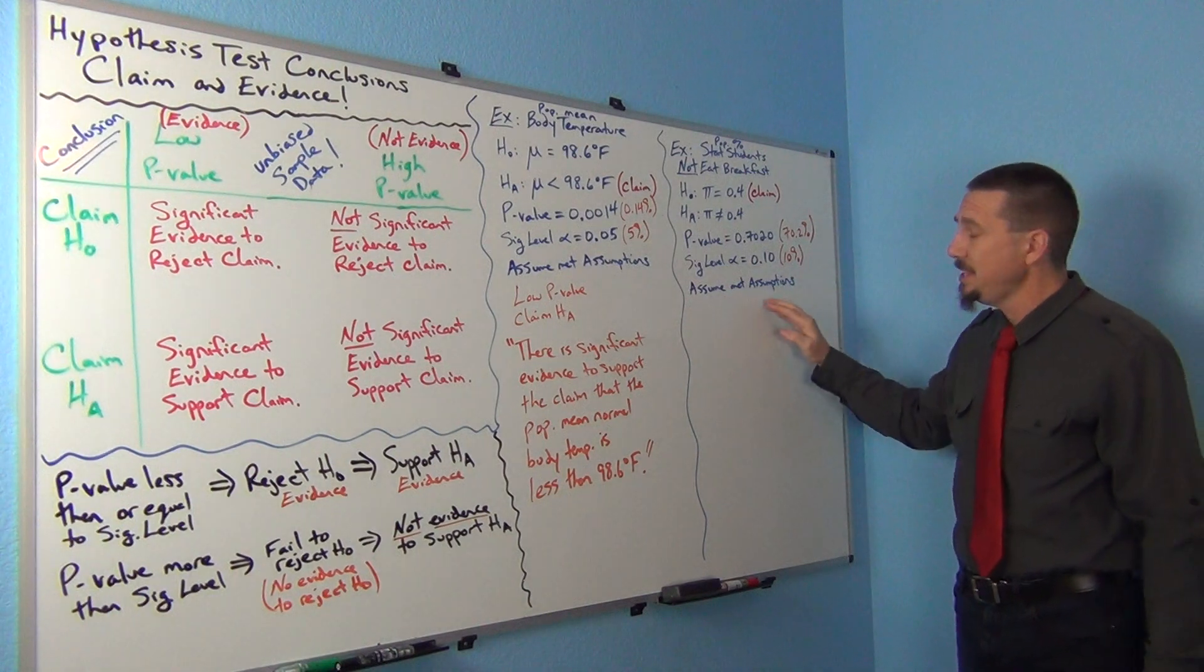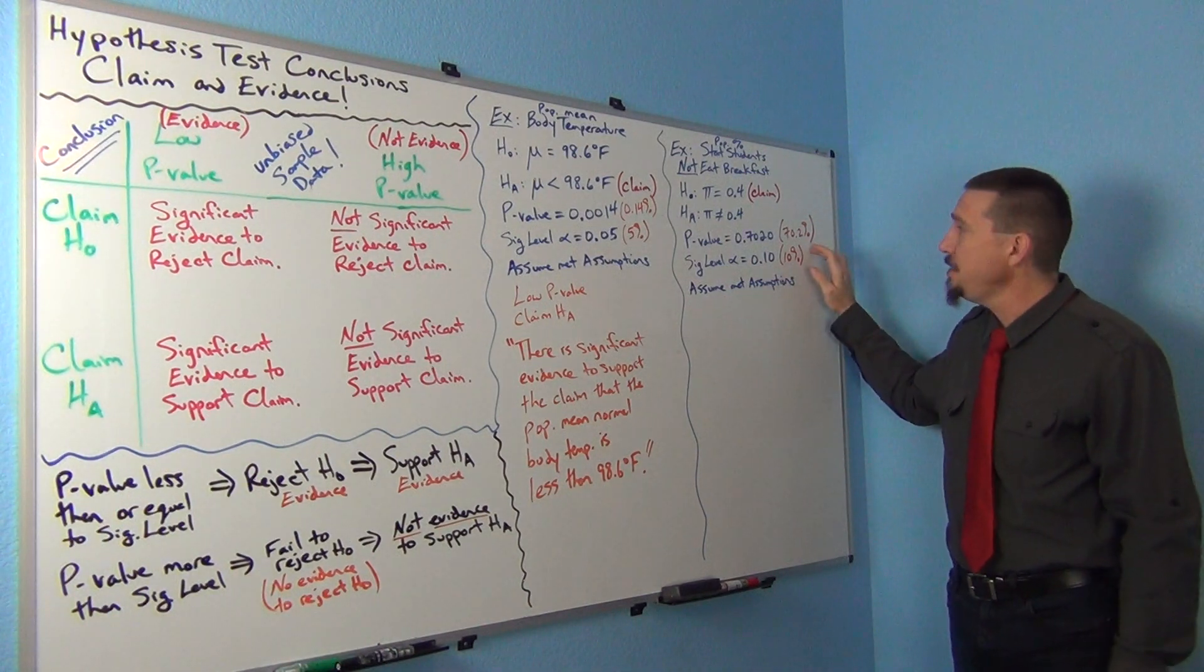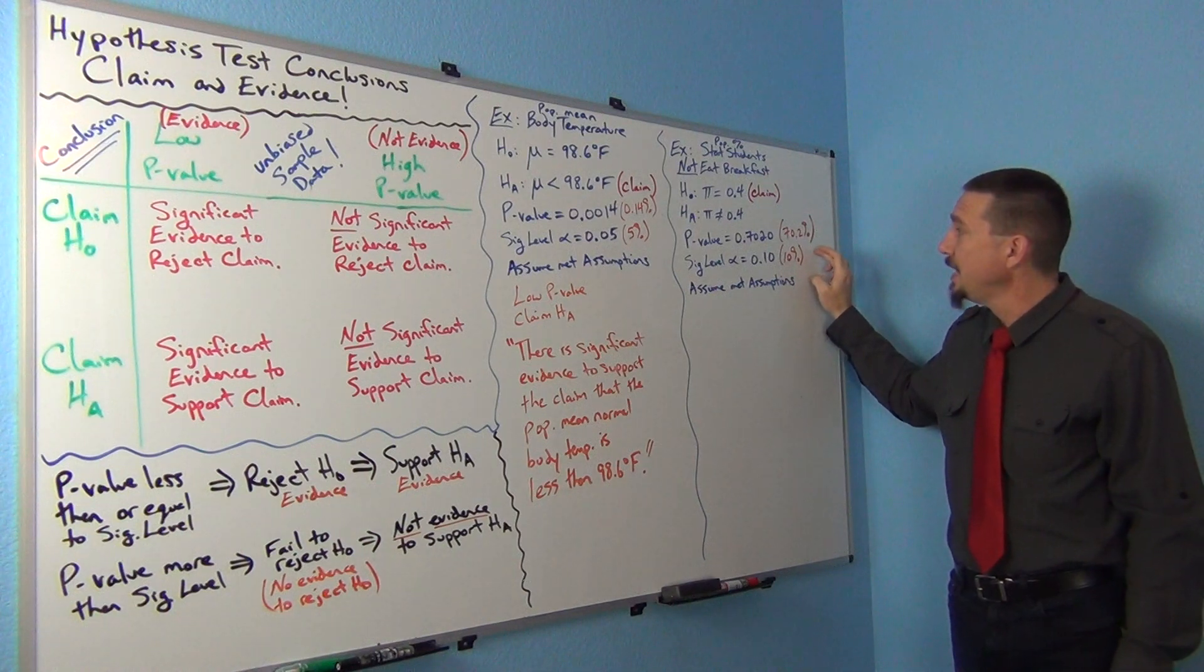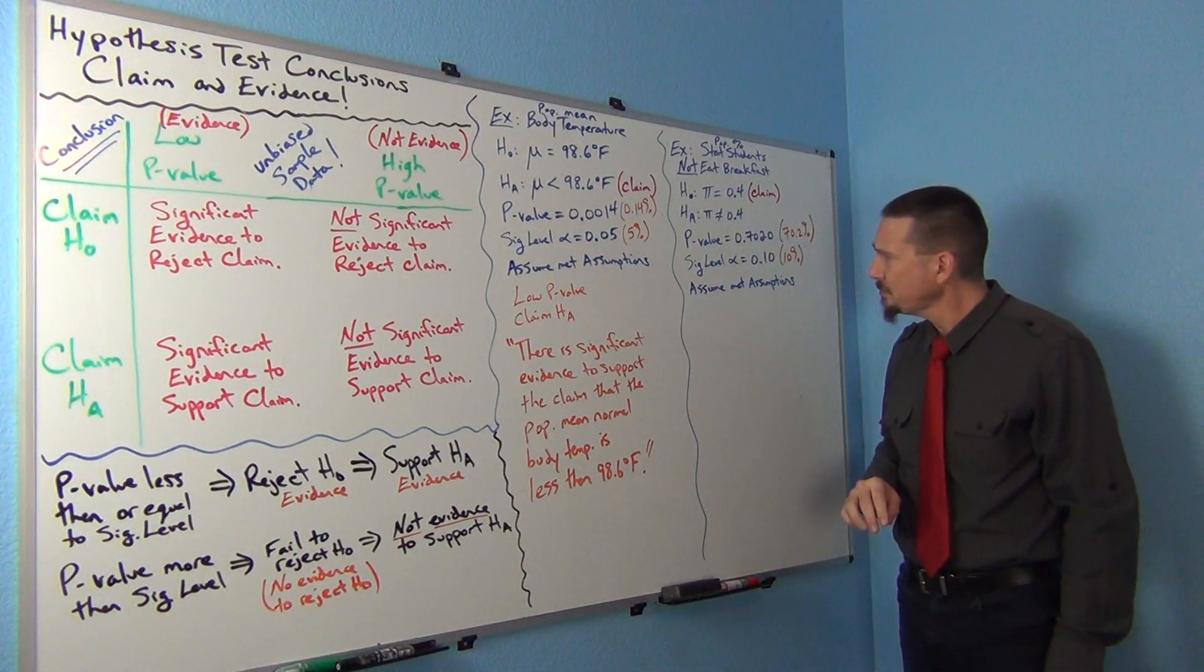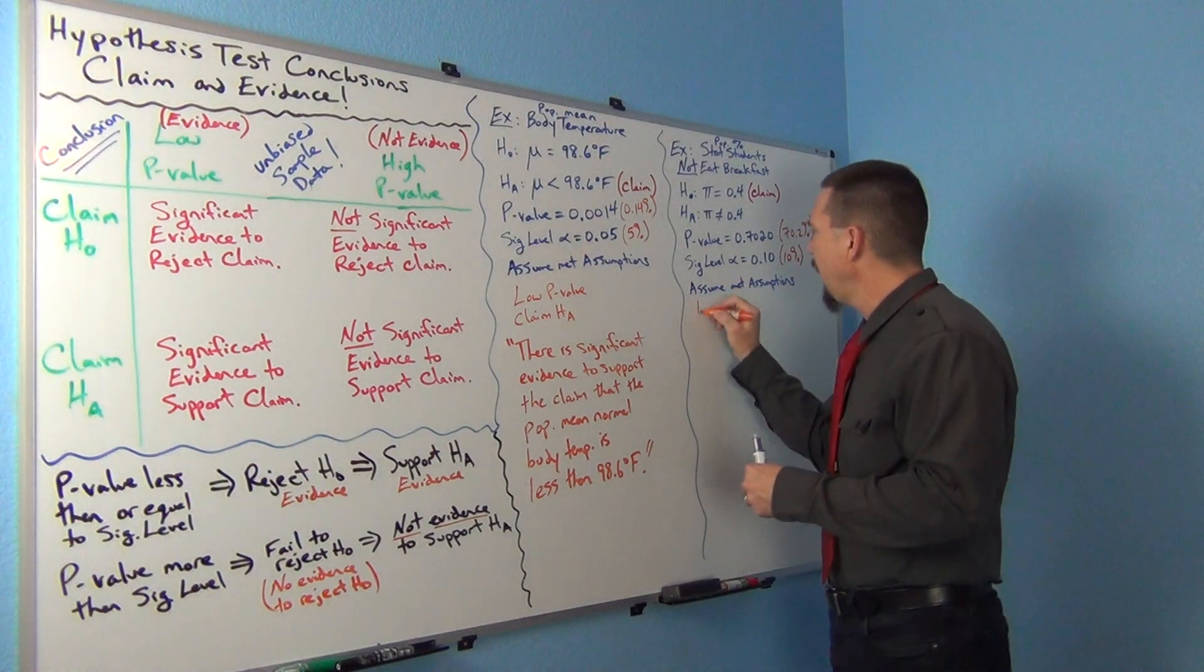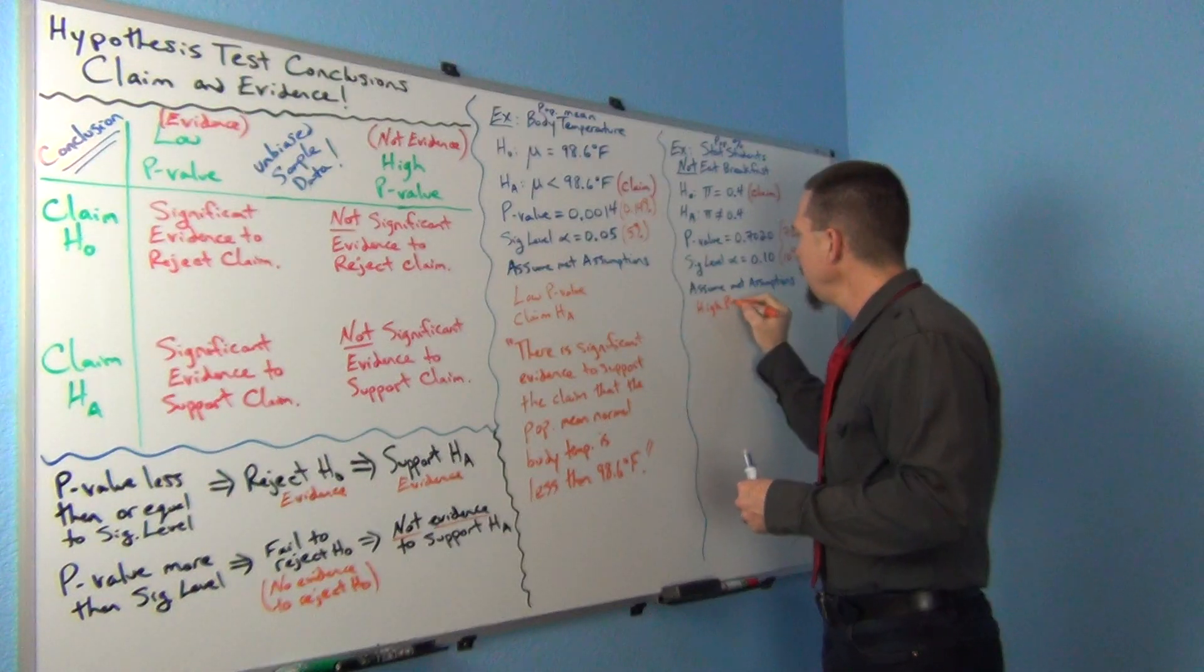So even if this data met the assumptions, a high p-value is going to be considered not significant evidence. So we do not have significant evidence. So let's think about this. We have a high p-value.